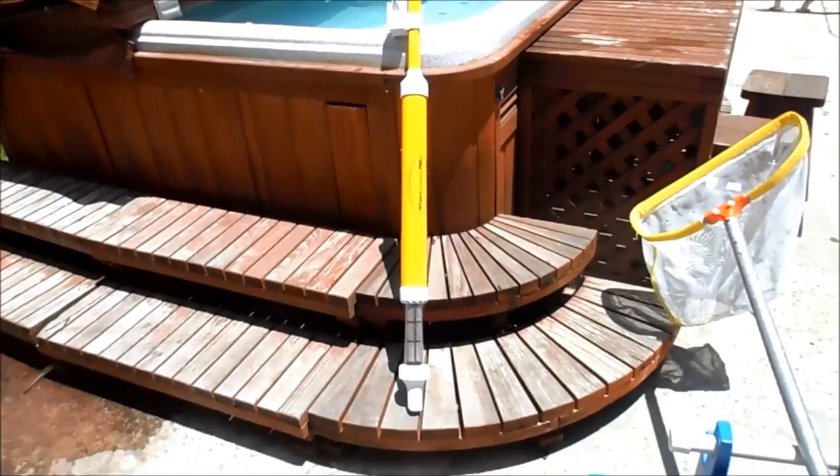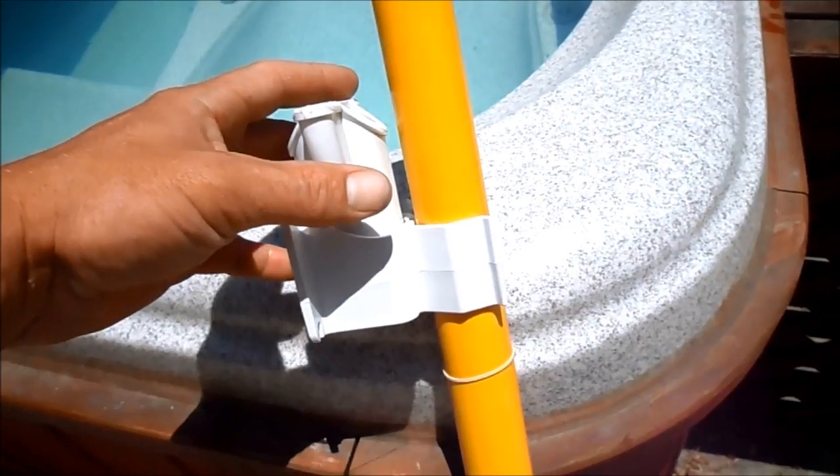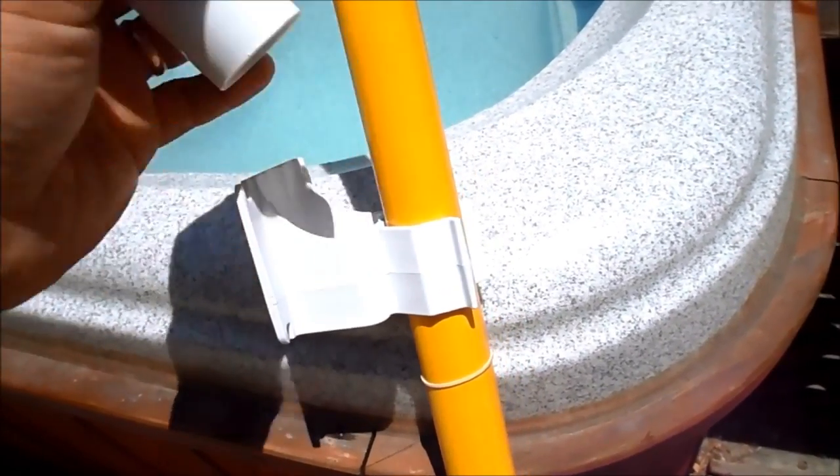This is a spa wand made by Polaris. It's good for your spa to clean out debris on the bottom. It comes with this little adapter, I'm going to put it on the front.